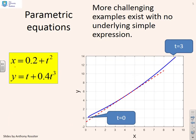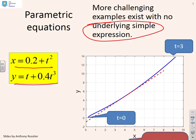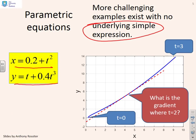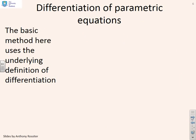Finally, a slightly more challenging expression: x equals 0.2 plus t² and y equals t plus 0.4t³. In this case there's no simple underlying expression. We might want to find the gradient where t equals 2, but since there's no underlying expression we can't use implicit differentiation as in the previous video.